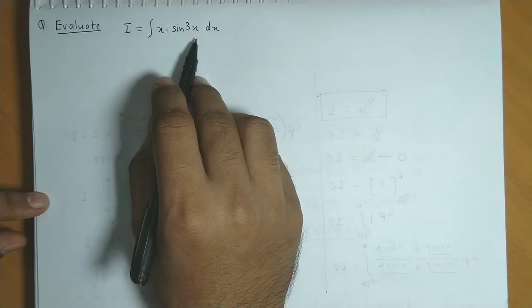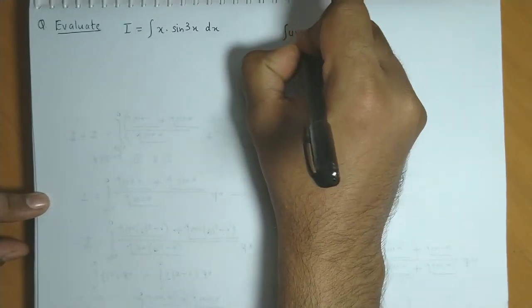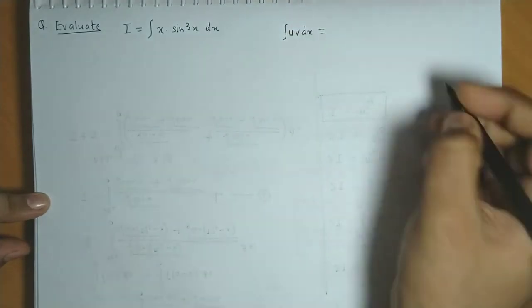So we apply the rule which is called integration by parts. That is, integration of u into v is